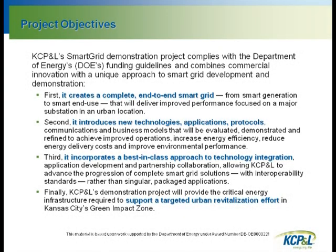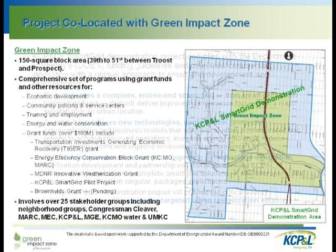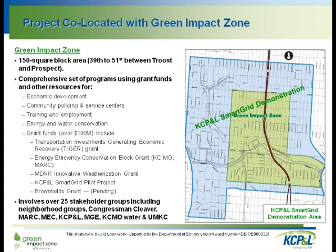The project has objectives like end-to-end smart grid, new technologies, and a best-in-class approach to technology adoption. What also makes it unique is the targeted urban revitalization that's happening. We believe one reason we received our smart grid demonstration grant is because our U.S. congressman went to Washington D.C. and got stimulus grant funding for an area called the Green Impact Zone in Kansas City. It's an underserved area — a lot of urban dwellers have left for the suburbs, which is happening in many cities across the nation.